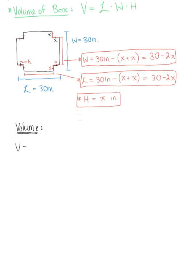We know that our volume is equal to length multiplied by width multiplied by height. So this is going to be equal to 30 minus 2x, multiplied by 30 minus 2x, multiplied by x.